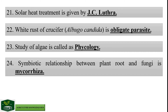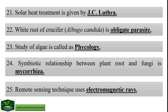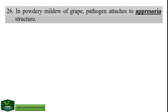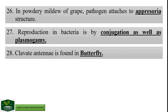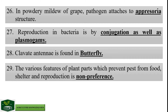Remote sensing technique uses electromagnetic rays. In powdery mildew of grape, pathogen attaches to appressoria structure. Reproduction in bacteria is by conjugation as well as plasmogamy. Clavate antenna is found in butterfly. The various features of plant parts which prevent pests from food, shelter and reproduction is called non-preference.